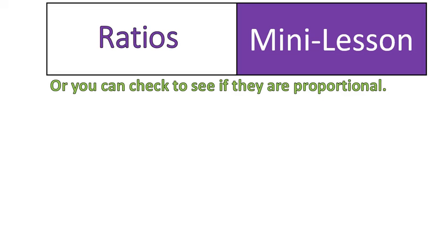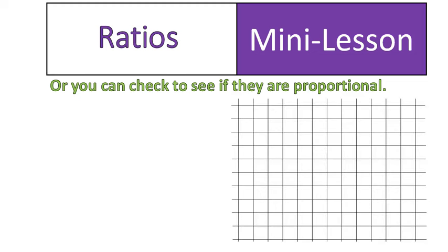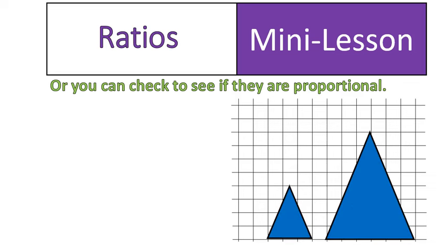The other way we can do this and check if they are proportional is to leave the squares the same size and just check. We're going to make a set of ratios and see if they are proportional.